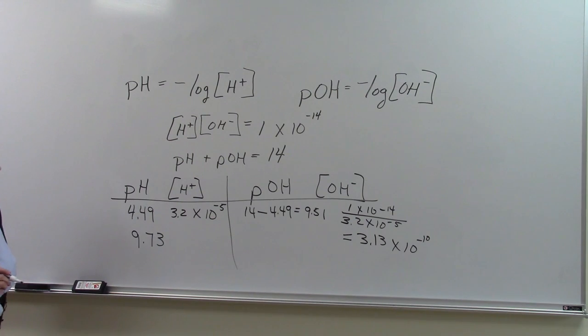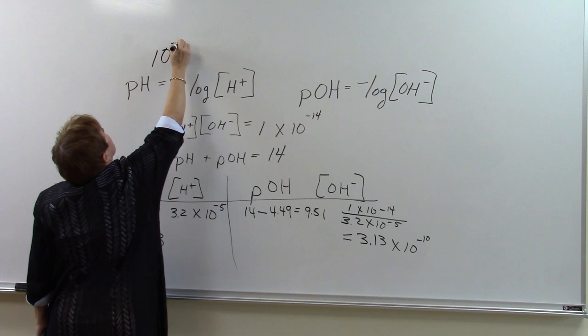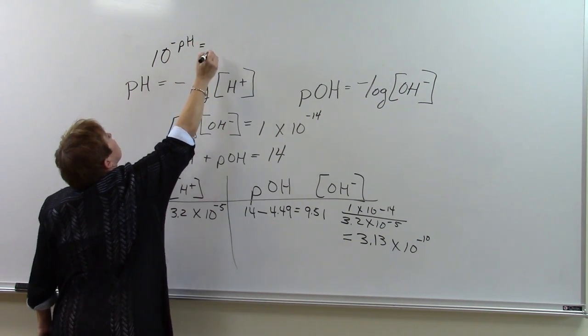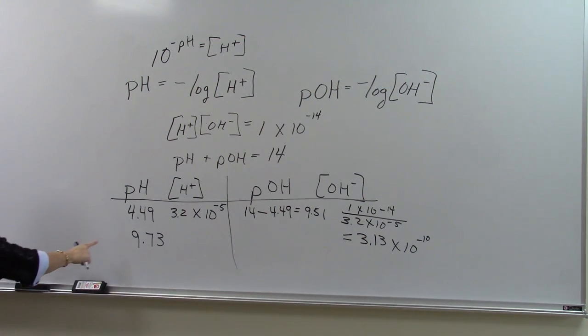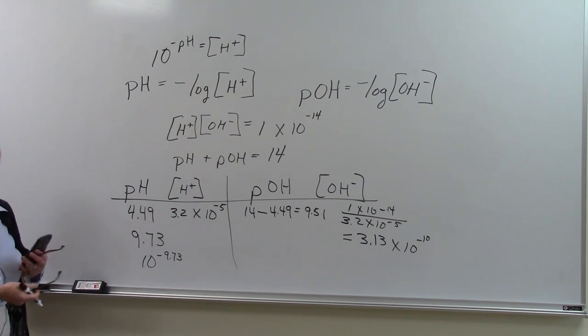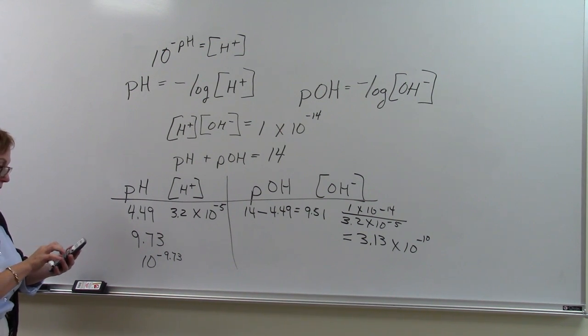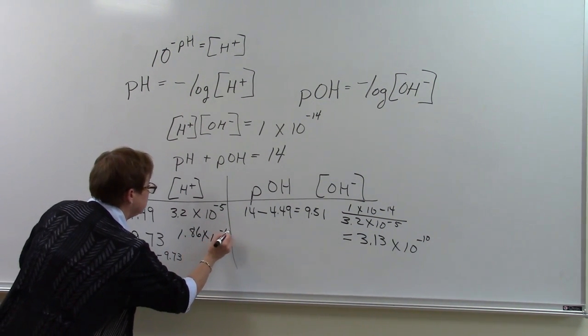Well, what I have to remember is a log is 10 to the x, so 10 to the negative pH equals the hydrogen ion concentration. So on my calculator, I will do 10 to the negative 9.73. When I do that, I will get 1.86 times 10 to the negative 10th.